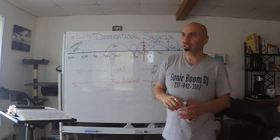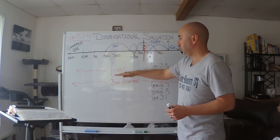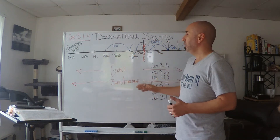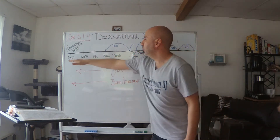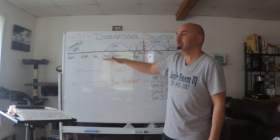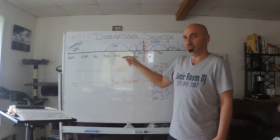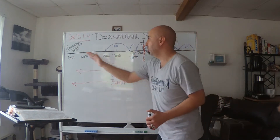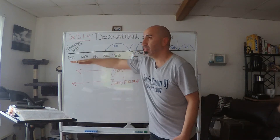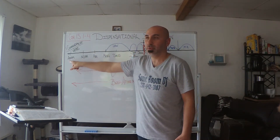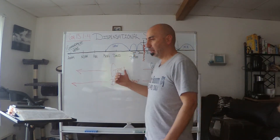Anyone that says salvation has always been the same through the Bible — I agree it's by the grace of God and requires a blood atonement, but it's not the same. If it were the same, we would have to do everything instructed in the Old Testament. If salvation is completely the same throughout all of human history, then we'd have to do what they were doing — including finding a tree we're not supposed to eat from and avoiding it.